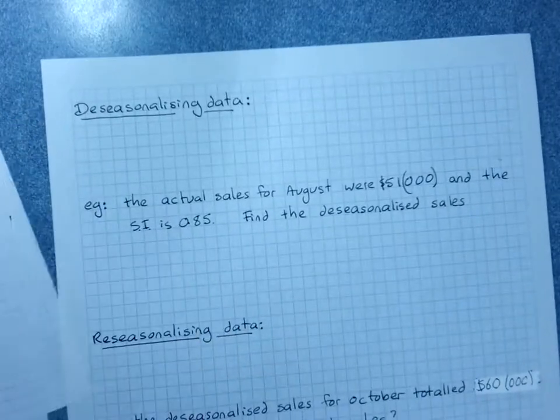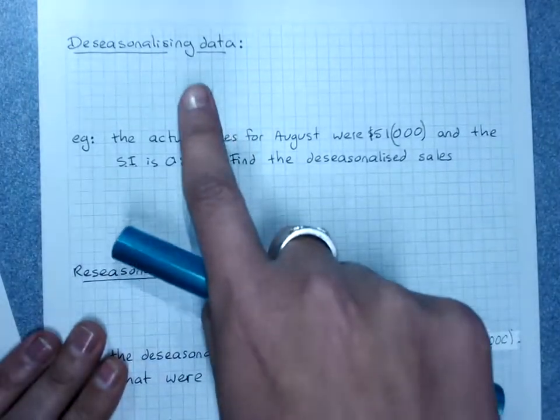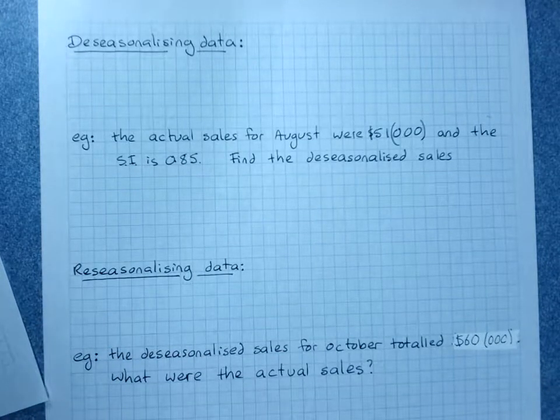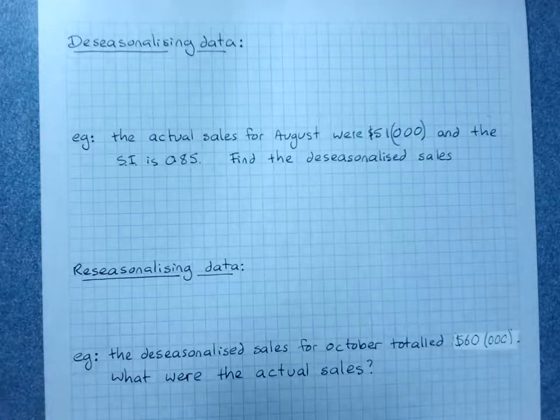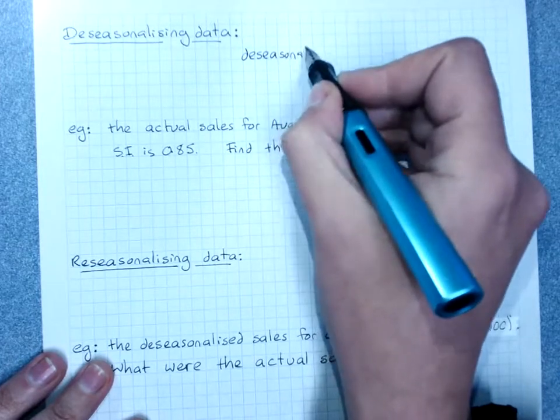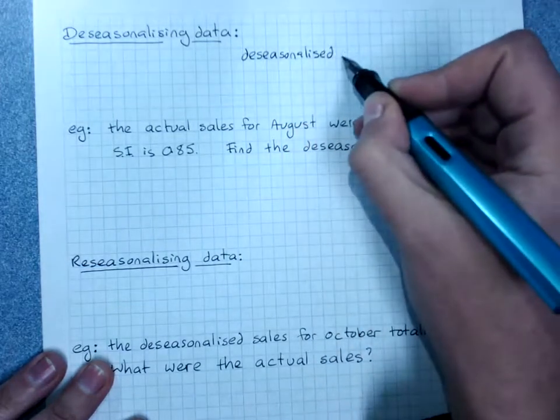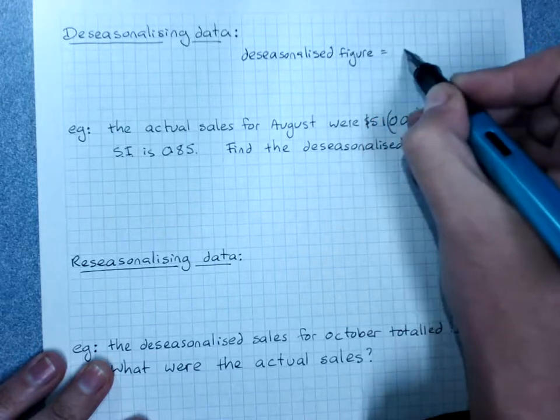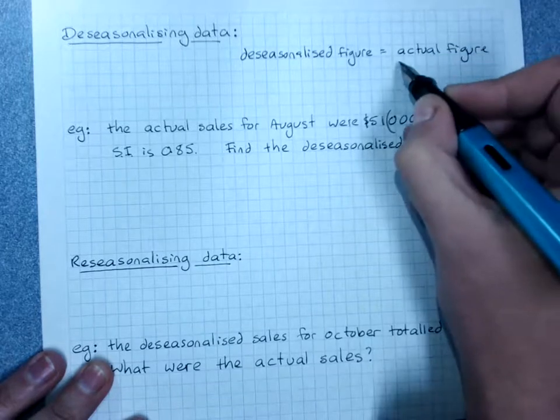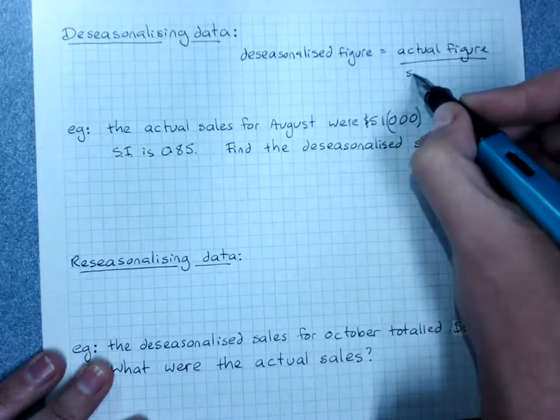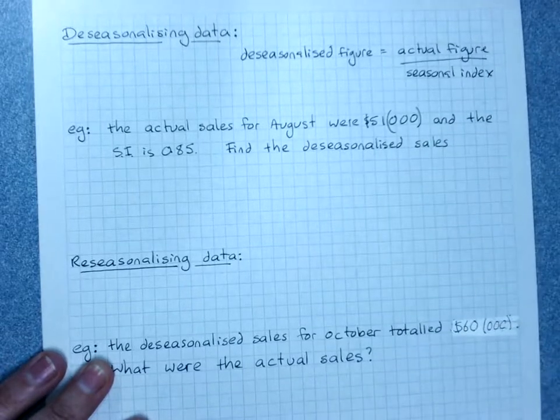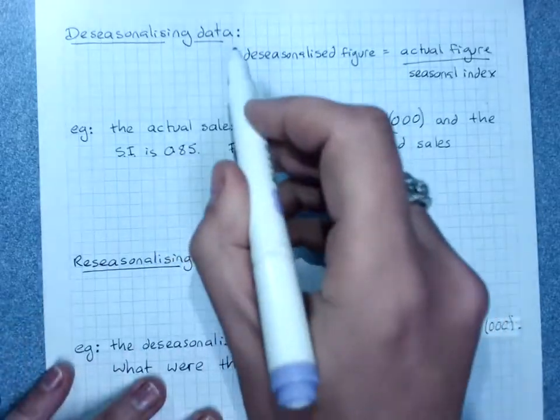Now our big aims were to be able to de-seasonalize and re-seasonalize data. We have a formula for this. A de-seasonalized figure or amount equals the actual amount or figure divided by the seasonal index.